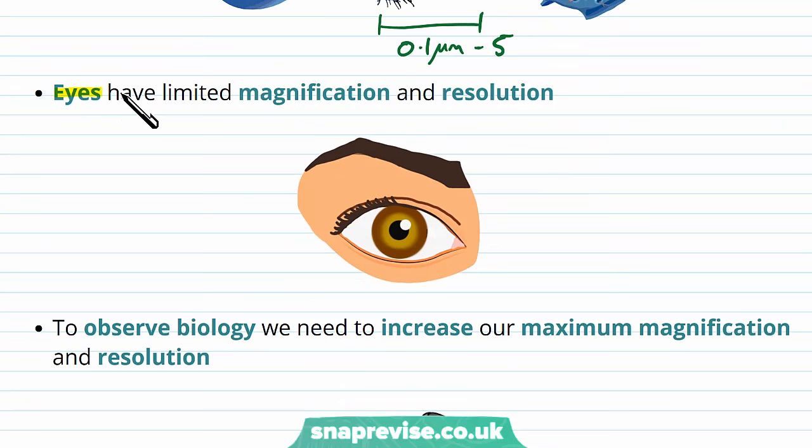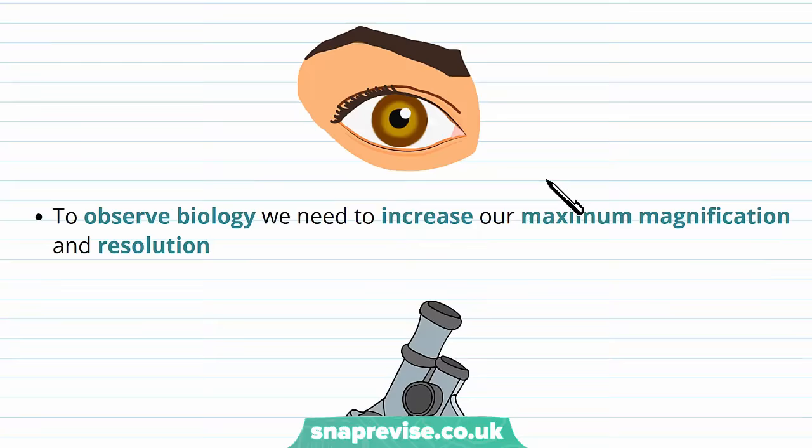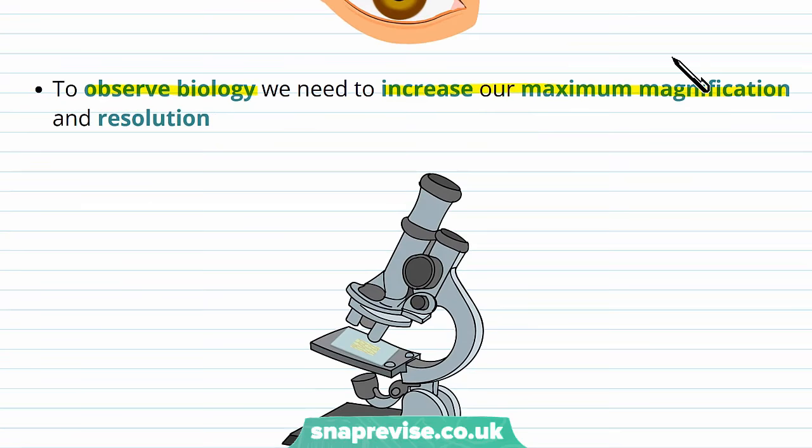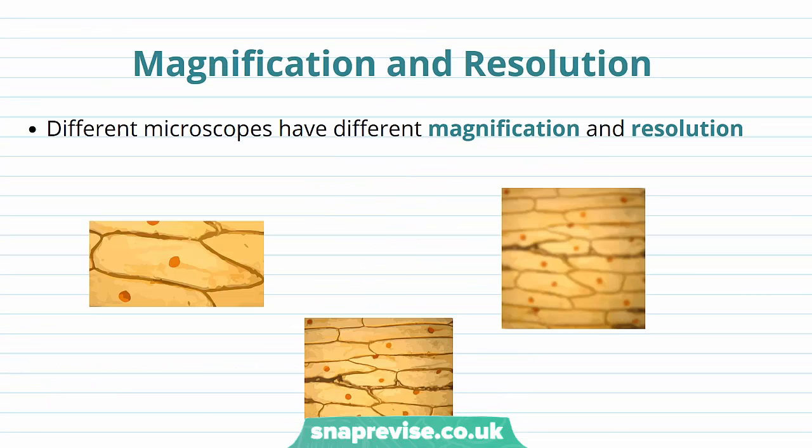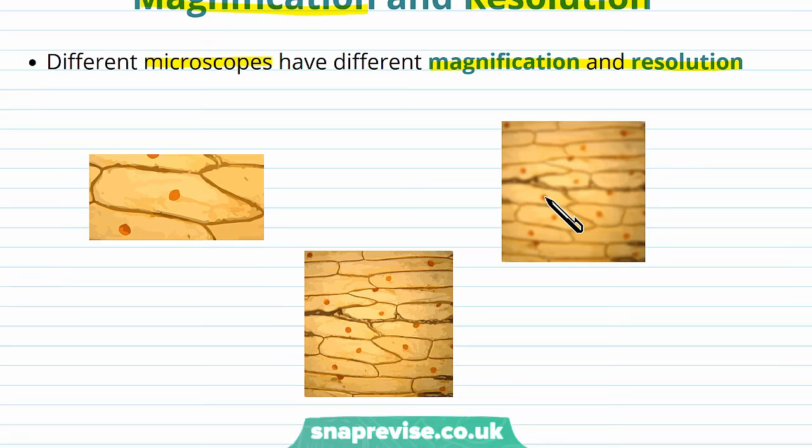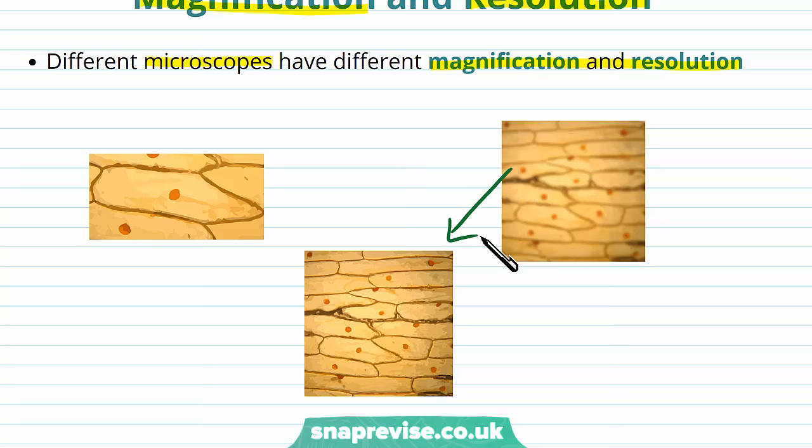And the eyes are limited because they don't have enough magnification or resolution, which are two terms that we'll go into more detail about. So to observe biology, we have to increase our maximum magnification and resolution. And in order to do this, we use microscopes. To understand how microscopes work, we need to be familiar with magnification and resolution. Different types of microscope have different levels of each. With increased magnification and resolution, we can see pictures become clearer, and we can also see more detail in smaller structures.